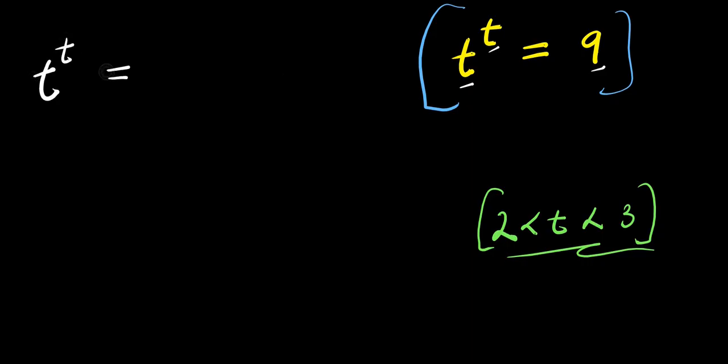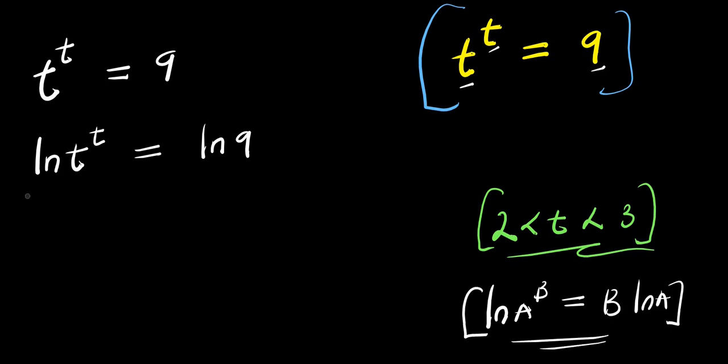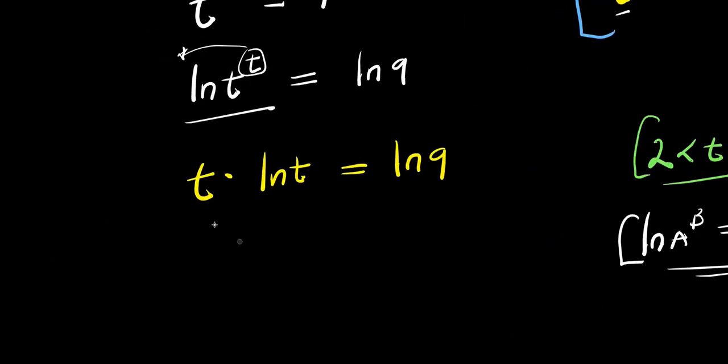We have t power t equals 9. We take the natural log of t to the power of t and this equals the natural log of 9. If you have natural log of a to the power of b, this equals b times natural log of a. We apply this property right here so the t will come behind the natural log. We have t times natural log of t equals natural log of 9. Right now if you multiply this out you have t ln t equals natural log of 9.